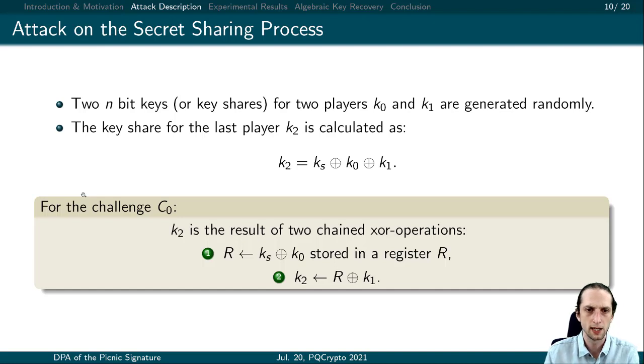In the following example, let's focus on a single challenge, let's say C0, which reveals the key shares of the first and second player. In this case, the key share of unopened player key2 is a product of two-chain XOR. The first XOR is with the secret key keyS and the first key share key0, which is then stored in register R. The second XOR is the value in the register with the second key share key1. The resulting value corresponds to the final key share key2. Therefore, we can transfer a key guess on the secret key keyS to a key guess on key2, which is supposed to be secret.